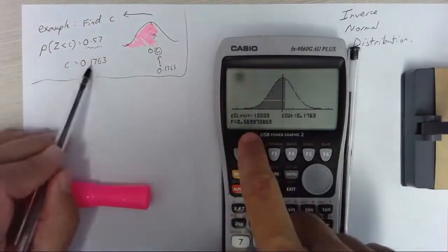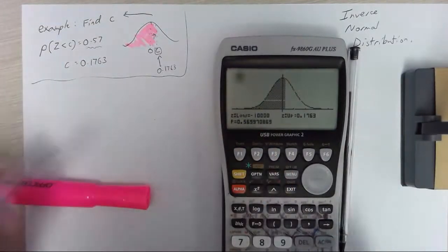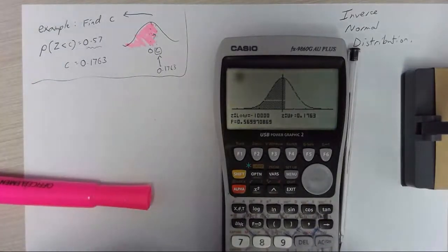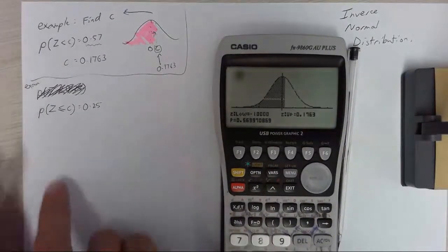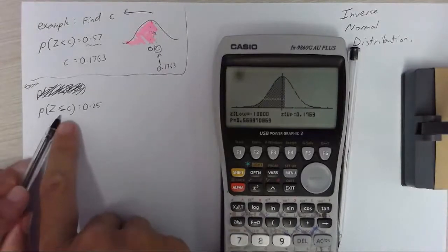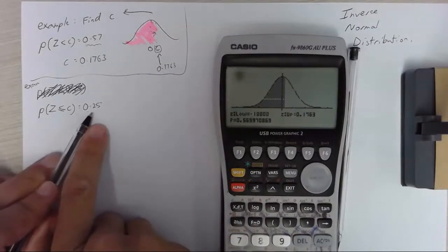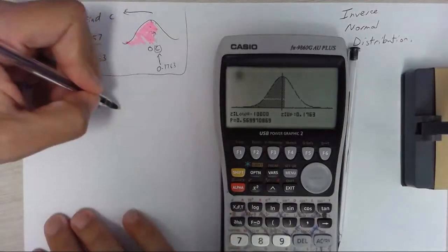I would have got the right answer if I hadn't gone to like six decimal places. All right so that's what the normal distribution and the inverse normal distribution is doing. This one says the probability that z is less than or equal to c is equal to 0.25. Now the only difference with this question,